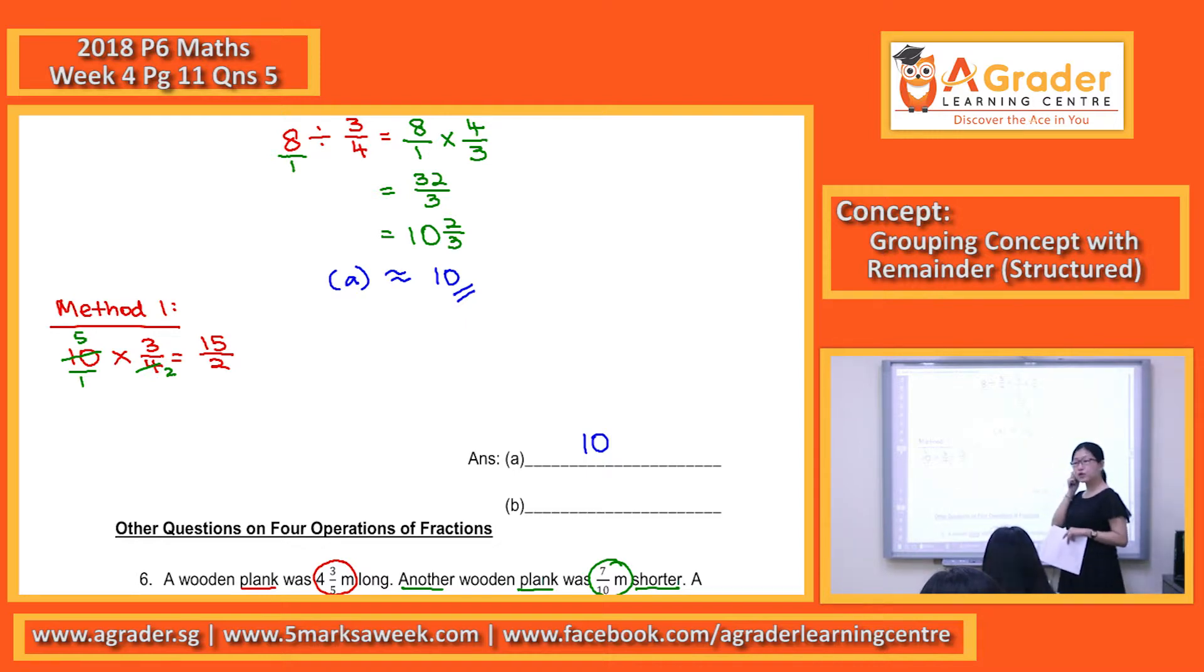Numerator times numerator, denominator times denominator. And again, you get improper, we change it to mixed number, 7 and a half.